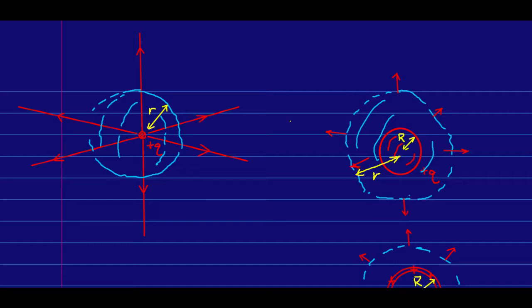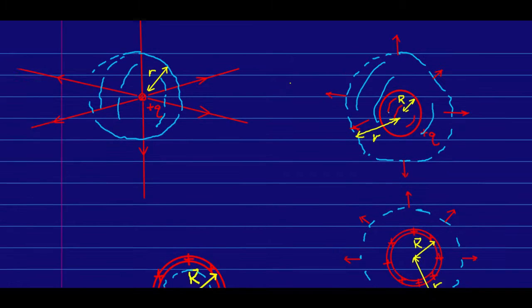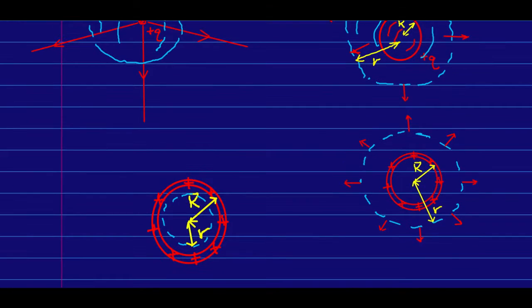But we can get one more piece of information out of this simple use of Gauss's law. Let's look at a two-dimensional picture. So here is the spherical surface, and here is the sphere. And let's say that all the charge on the sphere is on its surface, so that in this two-dimensional cross-section, it's all out on this circle here.